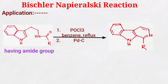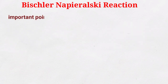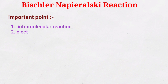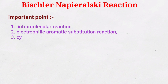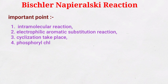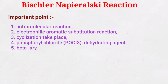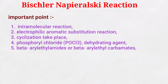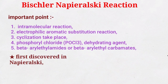The most important points about the Bischler-Napieralski reaction: first, it is an intramolecular reaction; second, it undergoes electrophilic aromatic substitution; and third, cyclization takes place. The reagent is phosphoryl chloride, a dehydrating agent. The starting material is beta-aryl ethylamides or beta-aryl ethyl carbamides. This reaction was first discovered in 1893 by Bischler and Napieralski.